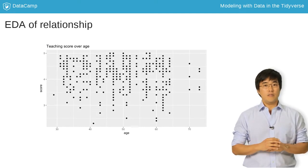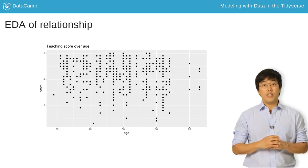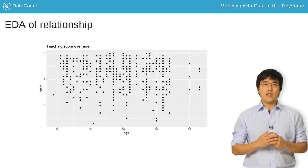Let's ask ourselves, is the relationship positive? Meaning, as professors age, do they also get higher scores? Or is it negative? It's hard to say, as the pattern isn't super clear.